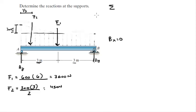So let's find AY first. The sum of the moments at B is equal to 0, right? Let me erase this.